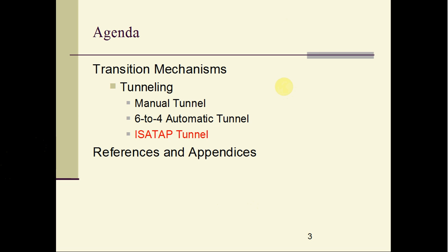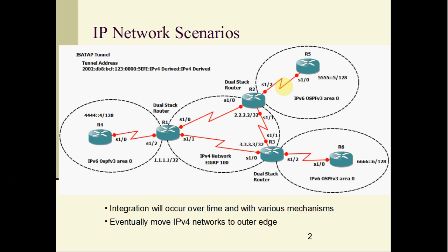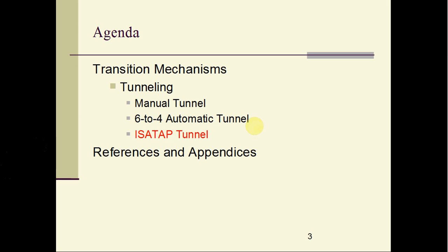Before we jump deeper into ISATAP tunneling, let me discuss the various drawbacks that manual tunneling has. A manual tunnel is point-to-point in nature, so we need one tunnel between router 1 and router 2, then one more tunnel between router 1 and 3, and finally one more tunnel between router 2 and router 3. So if we go for a manual tunnel it will be a full mesh of tunnels among the dual stack routers, which is impractical to manage in a huge network. The better solution is to use an automatic tunnel — either 6to4 or ISATAP.